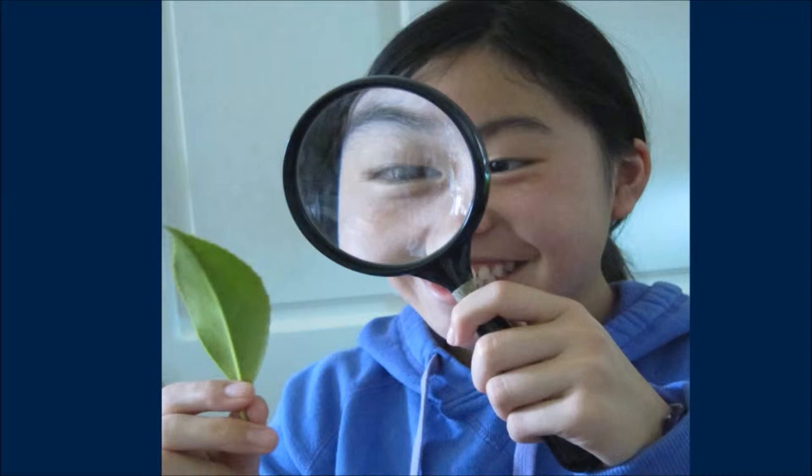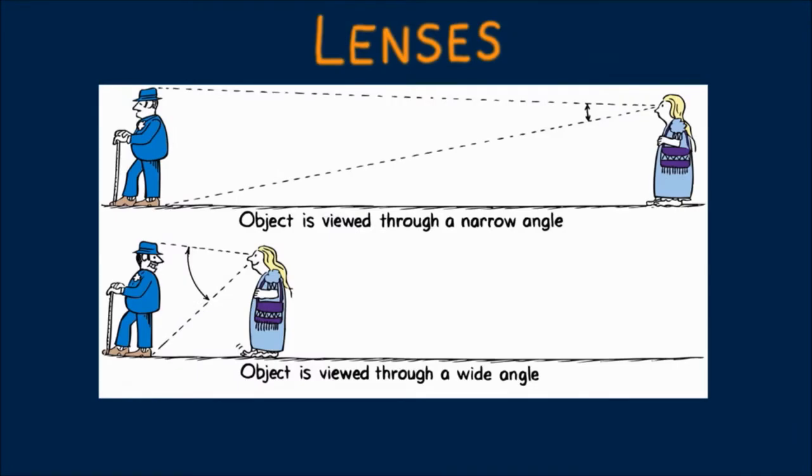She views the leaf through a wider angle when she views it with a magnifying glass. To understand how it works, think about how you examine objects near and far. With unaided vision, a far away object is seen through a relatively narrow angle of view. And a close object is seen through a wider angle of view.